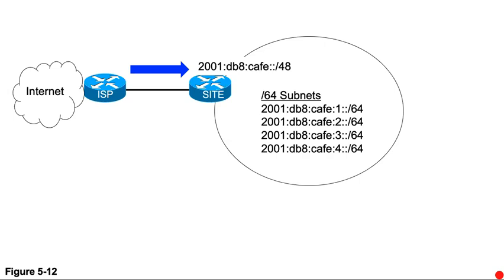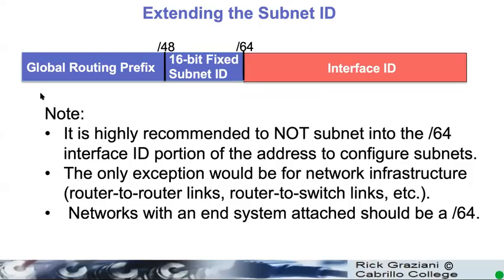So again, use that subnet ID — that part between the global routing prefix and the 64 bits for the interface ID — and you just make that your subnet ID. In our case, 1, 2, 3, 4. It's that easy. It is highly recommended not to subnet into this 64-bit interface ID. So, use a slash 64.